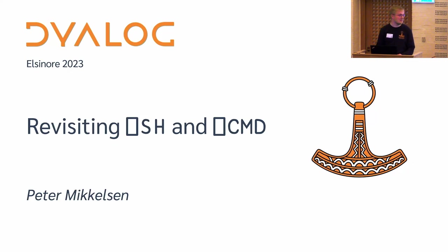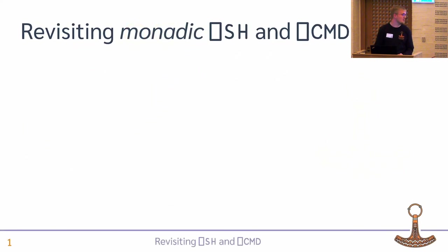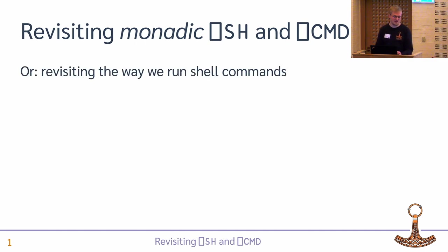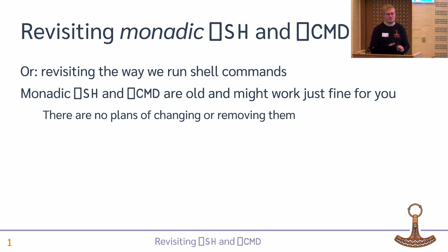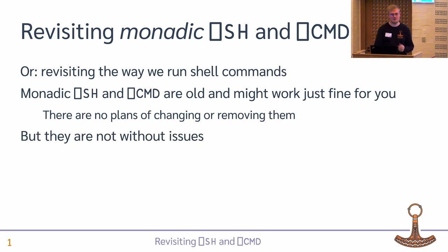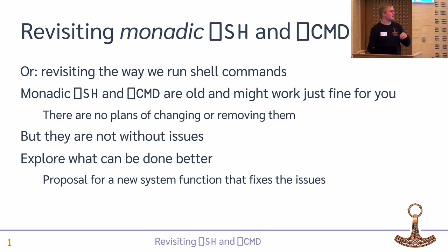The title is 'Revisiting Quad-SH and Quad-CMD', but maybe it should have been 'Revisiting Monadic Quad-SH and Quad-CMD', or even 'Revisiting the way we run shell commands'. Currently we have Quad-SH and Quad-CMD as methods to run shell commands and they're pretty old. They might just work fine for the purposes you use them for, so we don't have any plans of changing or removing those, but they still have some issues or stuff they could do better. We're looking at exploring what could be done better and perhaps introducing a new system function to solve those problems.